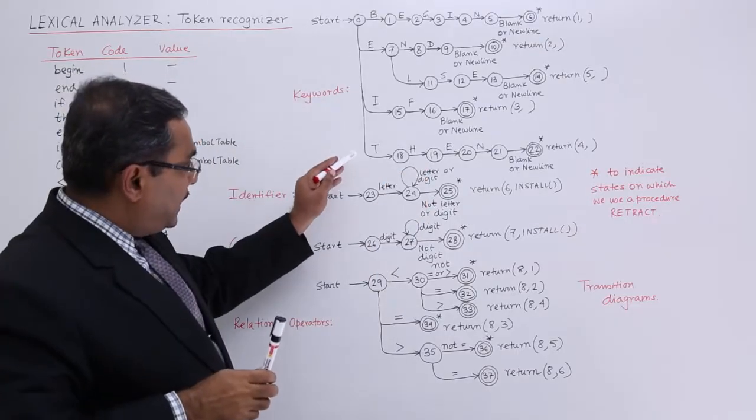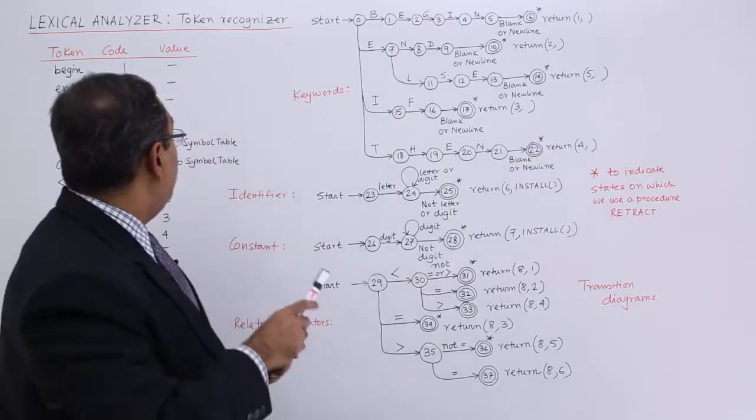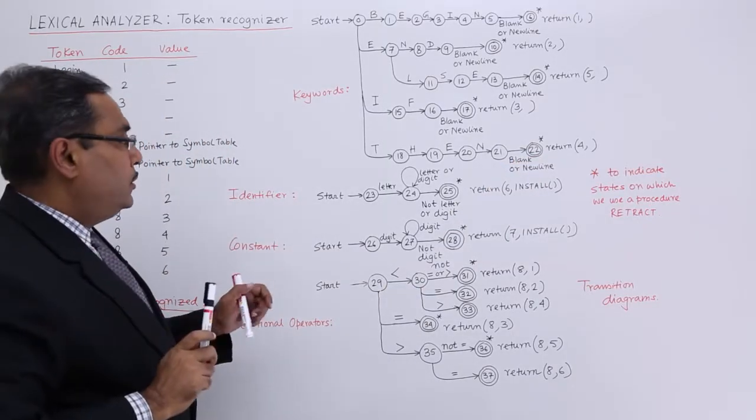From start, THEN blank or newline return 4, because then should be having the value 4 here.